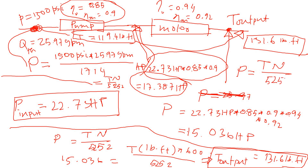If you look at the equation, if you decrease the RPM then torque increases — that's how torque is multiplied. In this example, the pump RPM was 1000 and the motor RPM was 600, so there was some torque multiplication.